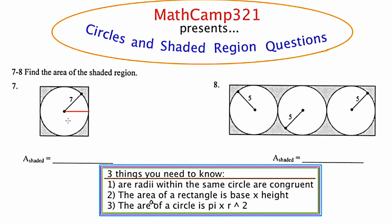Now, how long is that radius that I just drew in red? Since all radii within the same circle are congruent, that radius is going to be 7 units long. I'm going to do the same thing by starting in the center and jutting across to the left horizontally. That also has a length of 7. This tells me that from all the way left to all the way right is a distance of 14 units, and I'm going to notate that on my diagram.